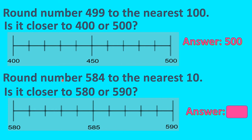Let's see this one. Round number five hundred and eighty-four to the nearest ten. We have to check in between which two tens this number falls, and concentrate on the tens place. The first ten will be eighty and the next ten will be ninety. So is it closer to five hundred and eighty or five hundred and ninety? When we place the numbers on the line — 581, 582, 583, 584 — we can clearly make out that five hundred and eighty-four is very much near to five hundred and eighty. So we will be rounding it to five hundred and eighty.